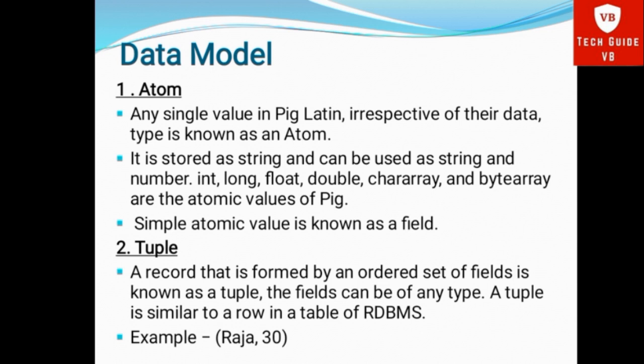The atomic value types in Pig are: Int, Long, Float, Double, CharArray, and ByteArray. A simple Atom value is known as a field. So, Atom is a single value at a time, stored in the form of a string and can be operated as a string or a number.